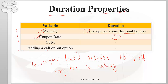Yield is also negatively related to duration. Cash flows further in the future are more sensitive to interest rate changes, but if we increase the yield, those distant future cash flows decrease substantially in present value — meaning more weight is given to nearer cash flows, which decreases duration.